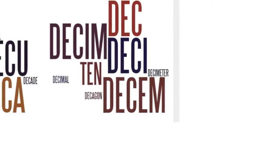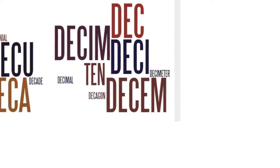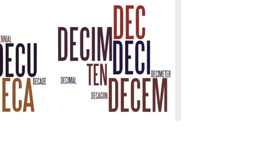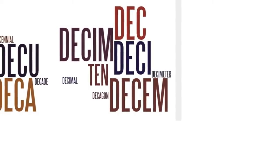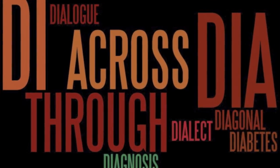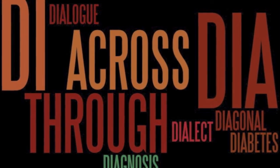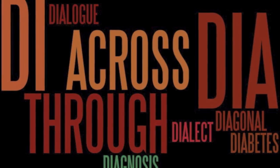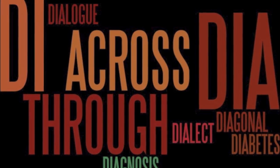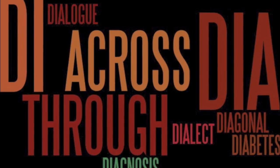Deci, dec, or decim, or decem, means ten, like decimal, December, decagon, or decimeter. And dia means across or through, like dialect, diagonal, diabetes, diagnosis, or dialogue.